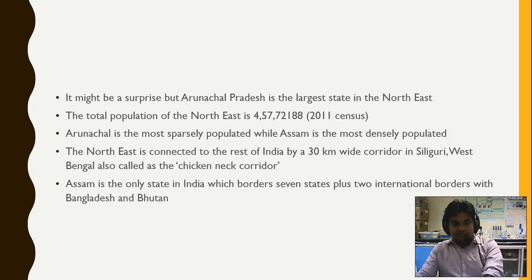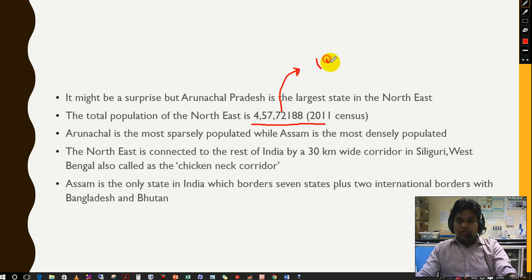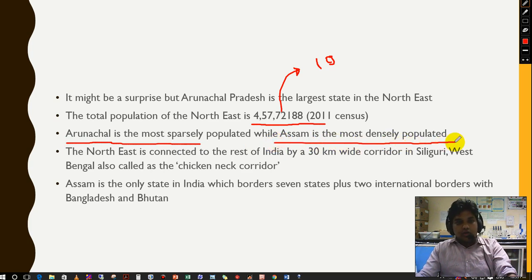Arunachal Pradesh is surprisingly the largest state of northeast India. The total population of northeastern India according to the 2011 census is 4 crore 57 lakhs — about 4.5 crores, which is roughly half the population of West Bengal which has around 10 crores. Arunachal Pradesh is the most sparsely populated state — not only in northeast India but in all of India — while Assam is the most densely populated northeastern state.